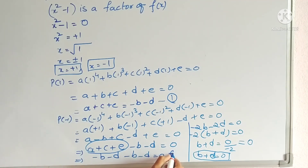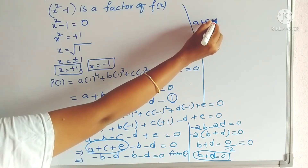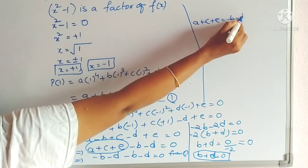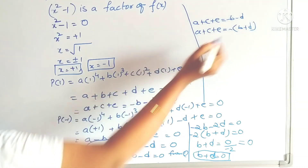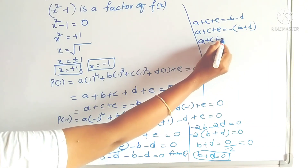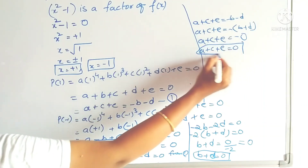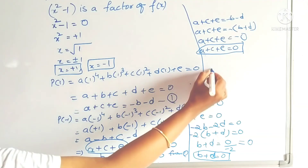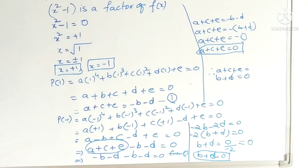From equation 1, a + c + e = −b − d. Taking minus common: a + c + e = −(b + d). Since b + d = 0, we get a + c + e = 0. Therefore a + c + e = b + d = 0, which is what we had to prove in this problem.